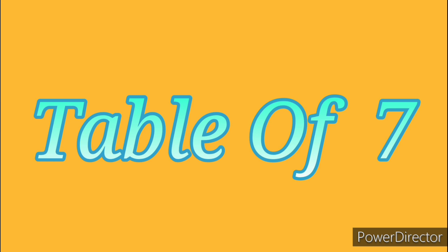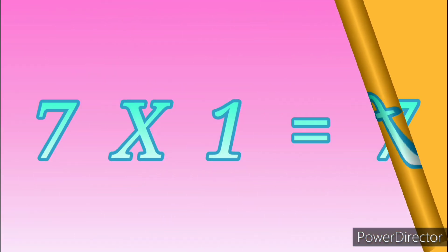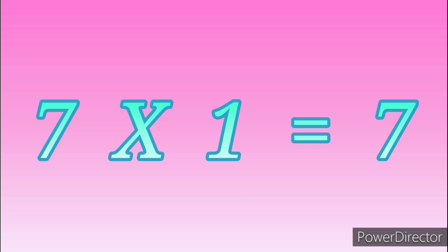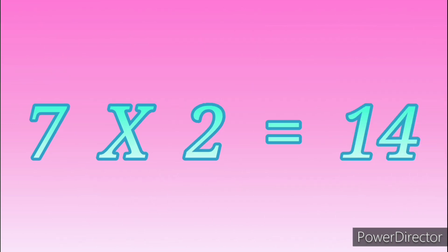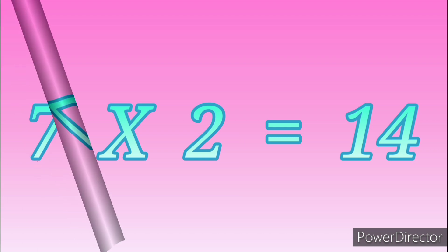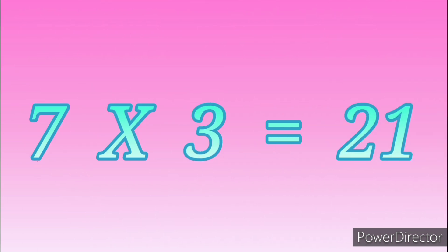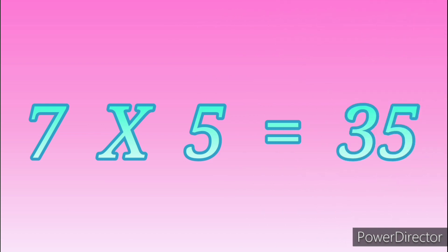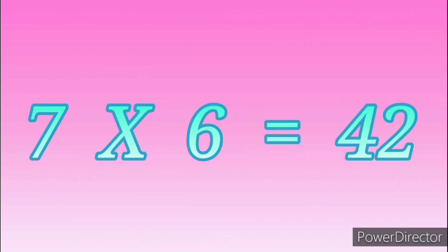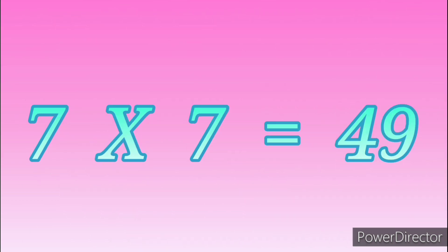Table of Seven. Seven ones are seven. Seven twos are fourteen. Seven threes are twenty-one. Seven fours are twenty-eight. Seven fives are thirty-five. Seven sixes are forty-two.